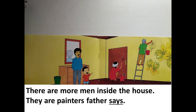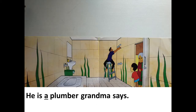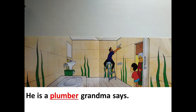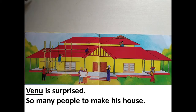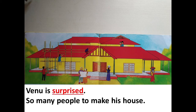Father says. Who is this person? Somebody working in the bathroom. Can you tell who this person is? He is a plumber. Grandma says. Venu is — how is Venu looking at all these things? Venu is surprised. So many people to make his house.